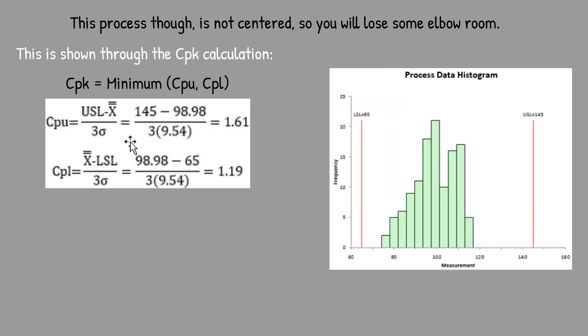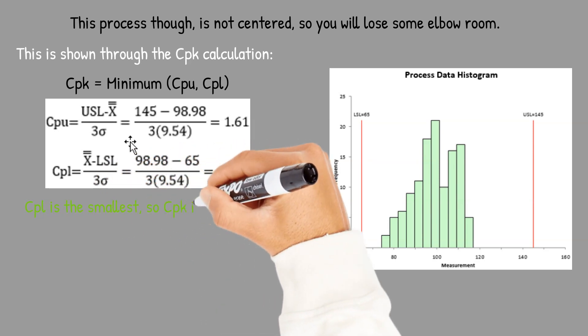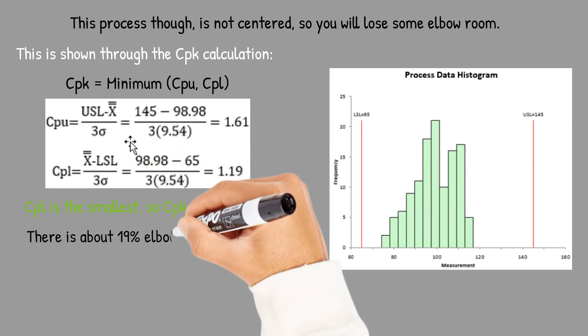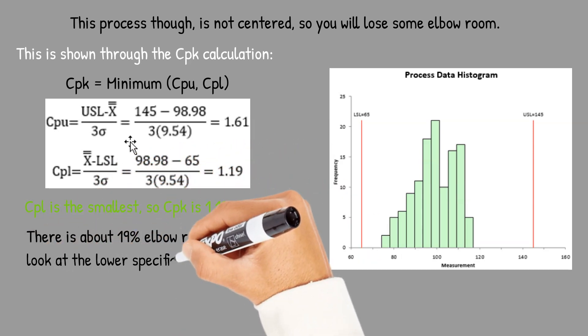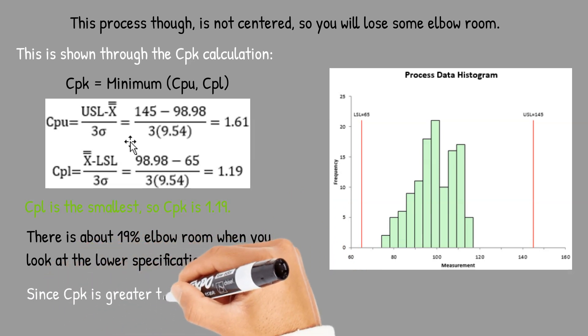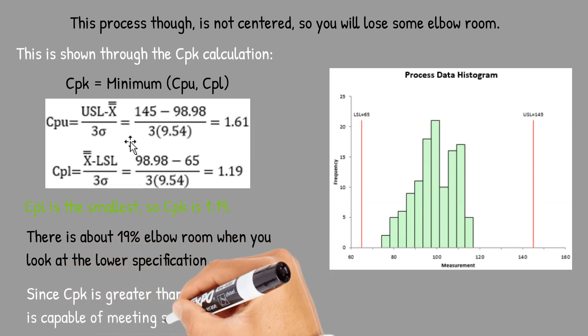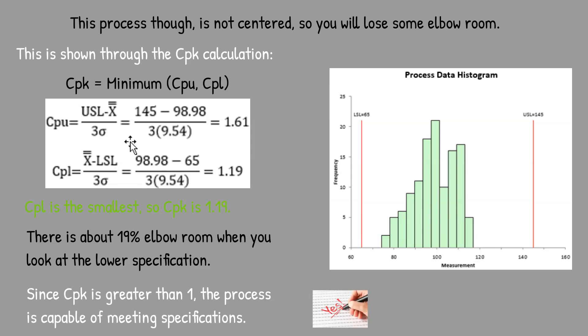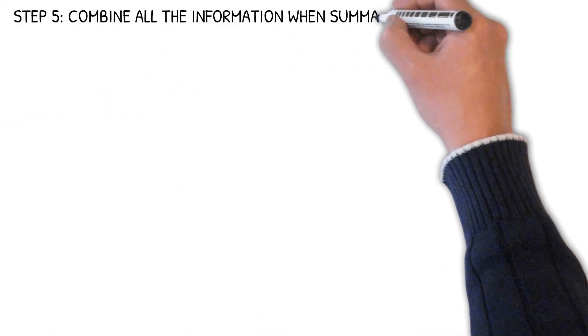This is shown through the CPK calculation, which is the minimum of the capability based on the upper and the lower spec. In this case, the upper is 1.61, the lower is 1.19. So CPL is the smallest and CPK is 1.19. Since it's greater than one, you're capable of meeting specifications.